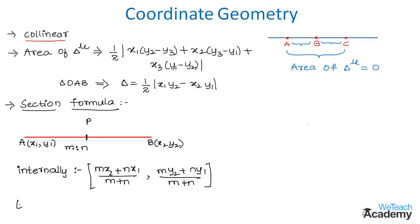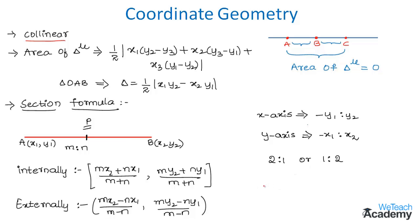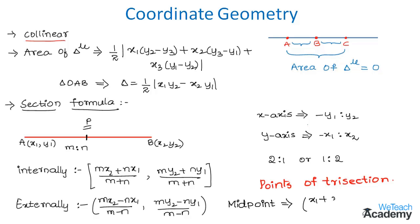If P divides the line segment externally, the formula becomes: P = ((mx2 − nx1)/(m − n), (my2 − ny1)/(m − n)). If the x-axis divides the line segment AB, the ratio is −y1 : y2. The points that divide the line segment in the ratio 2 : 1 or 1 : 2 are called points of trisection. The coordinates of the midpoint of line segment AB are: ((x1 + x2)/2, (y1 + y2)/2).